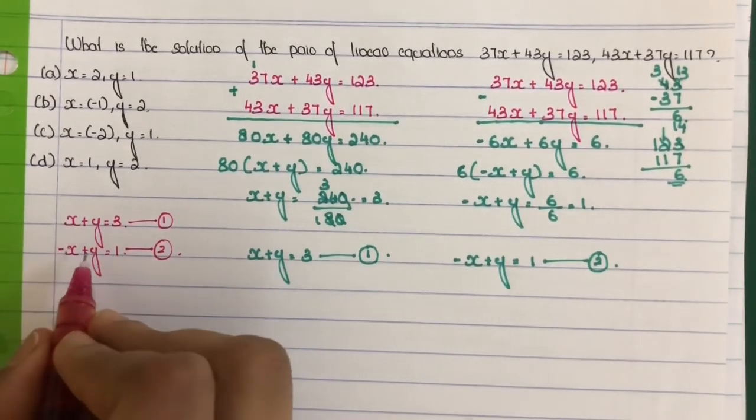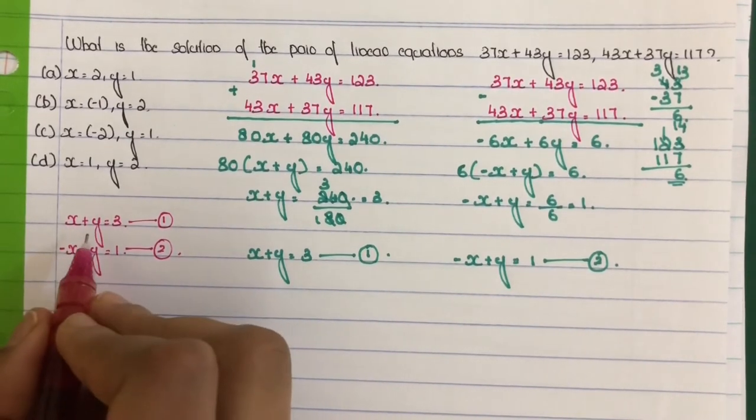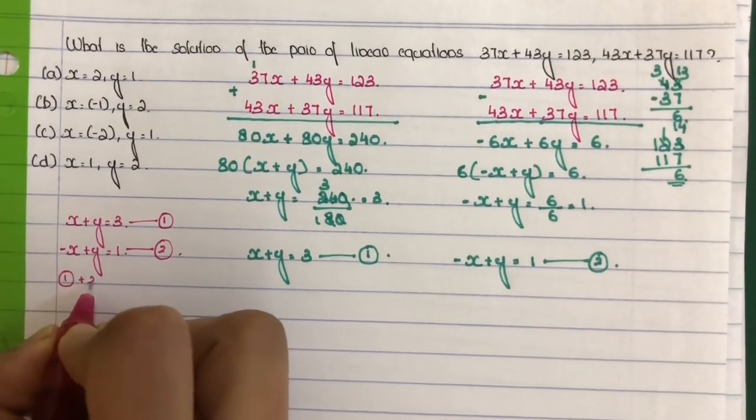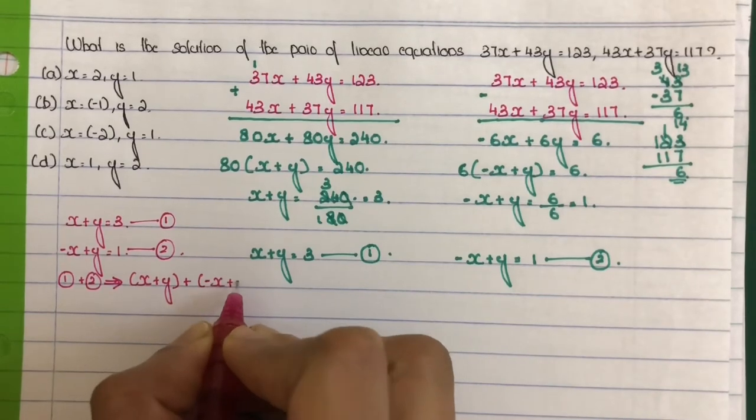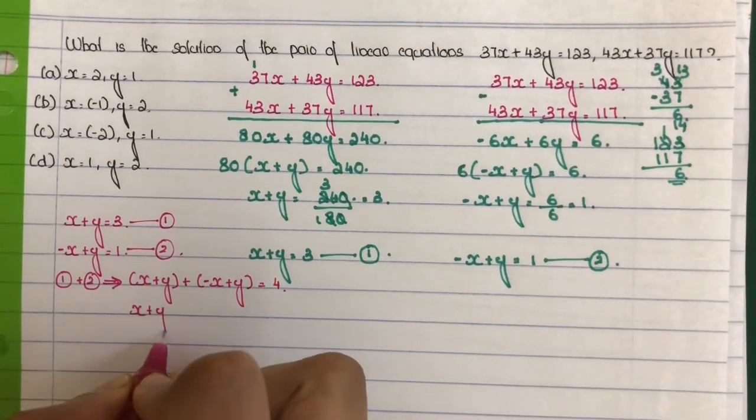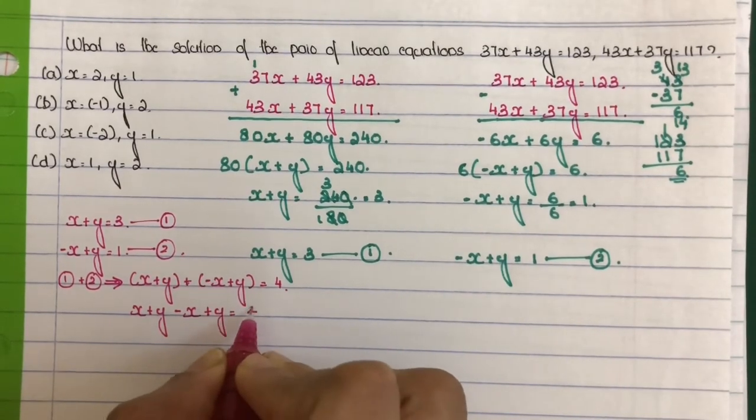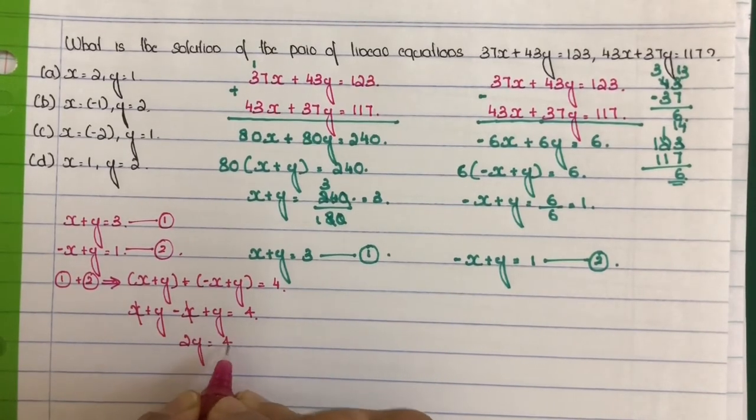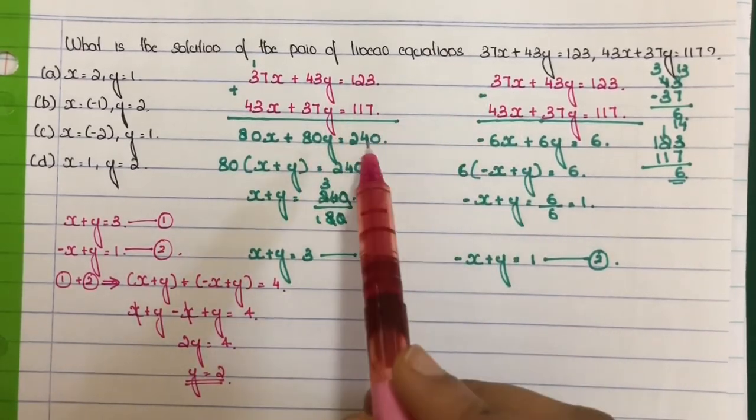In these two equations, the x coefficients have opposite signs and the y coefficients have the same sign. So we should add them. Add the equations: x plus y plus minus x plus y equal to 3 plus 1. x minus x is 0, y plus y is 2y, equal to 4. So 2y is equal to 4, therefore y is equal to 4 by 2, that is 2.